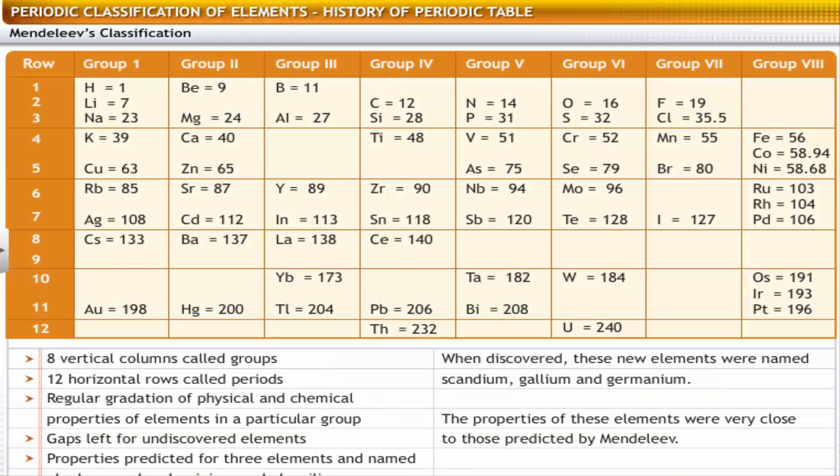Let's look at the features of Mendeleev's periodic table. The table had eight vertical columns called groups and twelve horizontal rows called periods. In every group, a gradation of physical and chemical properties of elements was observed.